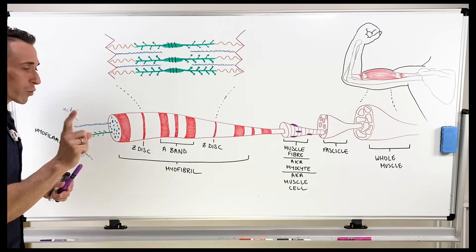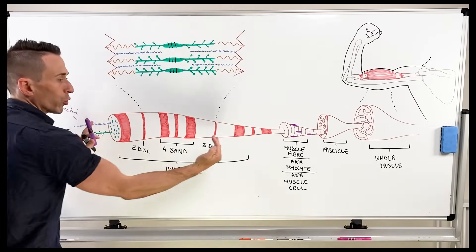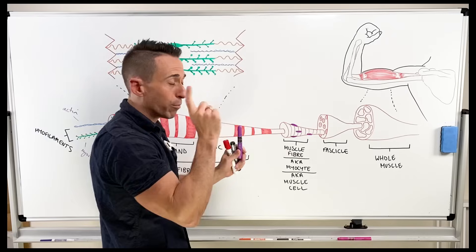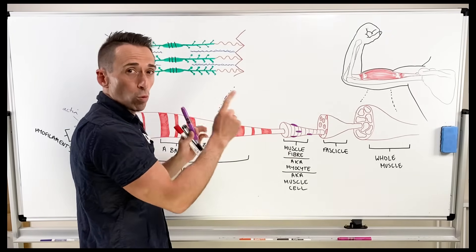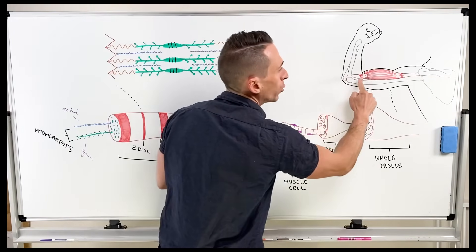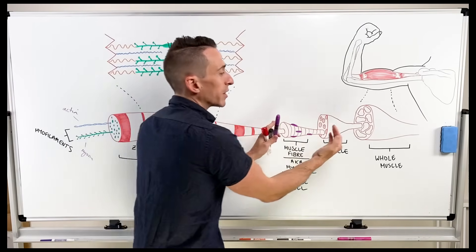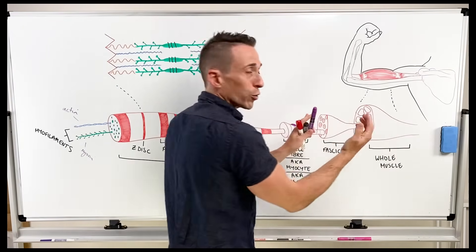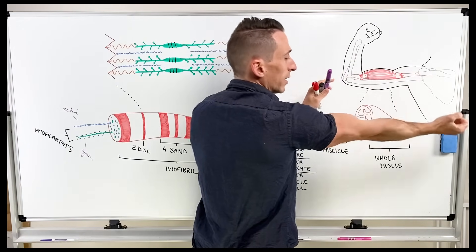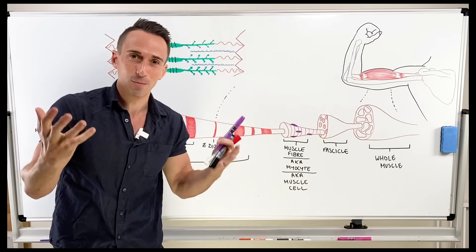Overall, when skeletal muscle contracts, what's happening is these proteins are shortening, which shortens the myofibril, which shortens the muscle fibre. Importantly, 98% of muscle fibres run the full length of the whole muscle. So when this muscle fibre shortens, the fascicle shortens, the whole muscle shortens, and because skeletal muscles cross at least one joint usually, you've got movement of the skeleton — and that's the whole purpose of skeletal muscle.